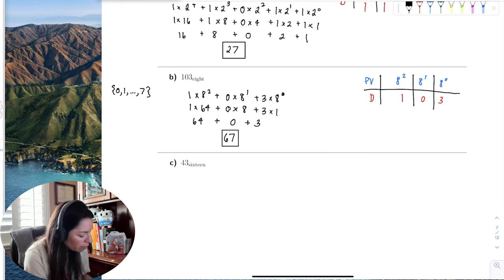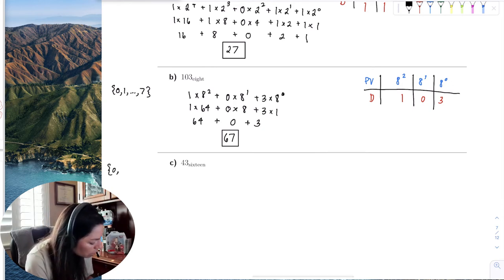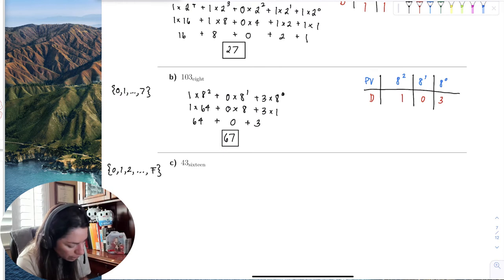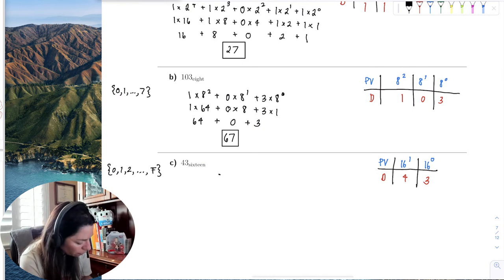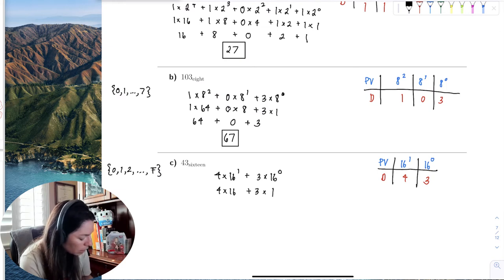Let's try 43 in base 16. Remember those are the digits 0, 1, 2 all the way to F. That's only two digits, so that's pretty simple. The place value would be the 1's place and the 16's place. The digits are 4 and 3. Expanding this, I get 4 times 16 to the first, plus 3 times 16 to the 0, which is 4 times 16 plus 3 times 1, and 16 times 4 is 64 plus 3, which is 67.